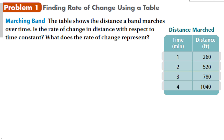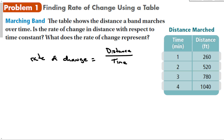For our first problem, the table shows the distance a band marches over time. Is the rate of change in distance with respect to time constant? Let's find out. Rate of change is going to equal — we need to decide which is the independent variable and which is the dependent variable. The dependent is the distance, so it's going to be distance over time. Time is the independent variable because distance depends on how much time has passed. Let's calculate the rate of change from each row of the table.